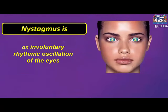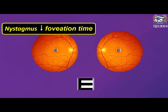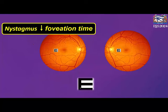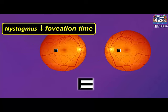As we all know, nystagmus is an involuntary rhythmic oscillation of the eyes. Nystagmus will decrease the foveation time, or what is called the recognition time. This will affect the quality of visual acuity of the patient.